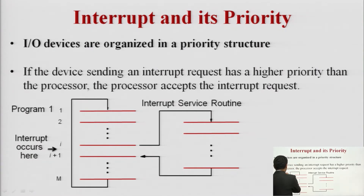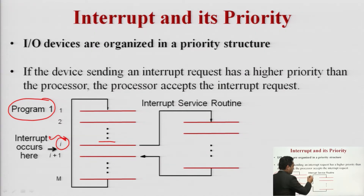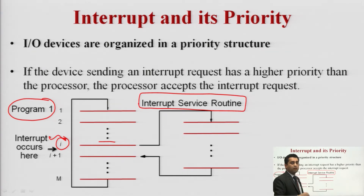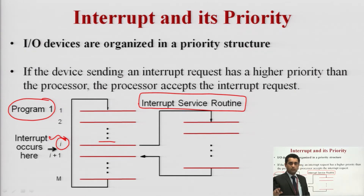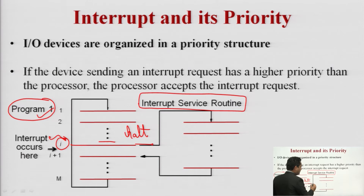Program number one is in execution, and one by one it executes — at the ith point, an interrupt signal is generated. Control goes to that particular point, and the interrupt service routine takes care of all the code in the interrupt. For example, the interrupt could be a battery low message or a system-at-risk prompt, like 'you have deleted the antivirus, click restart now.' These are types of interrupts, and higher priority code causes program one to halt while the interrupt service routine executes.